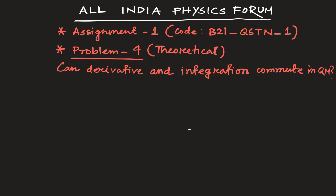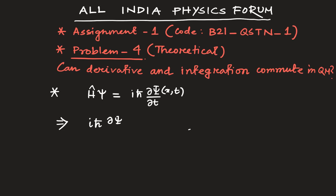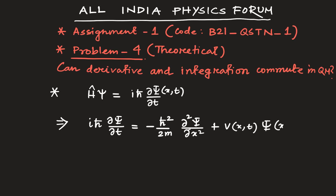Let us start with the basic Schrödinger equation. The operator structure is H-hat ψ equals ih-bar del ψ del t. In general this is a function of x and t, which equals negative h-bar squared over 2m times del² ψ del x² plus V(x,t) times ψ(x,t).